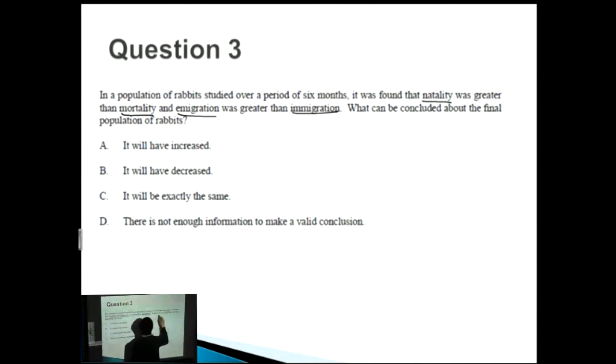Think of natality very simple: birth, baby rabbits coming into the population. Mortality? Opposite: death. Emigration is rabbits moving out. Immigration: rabbits moving in.